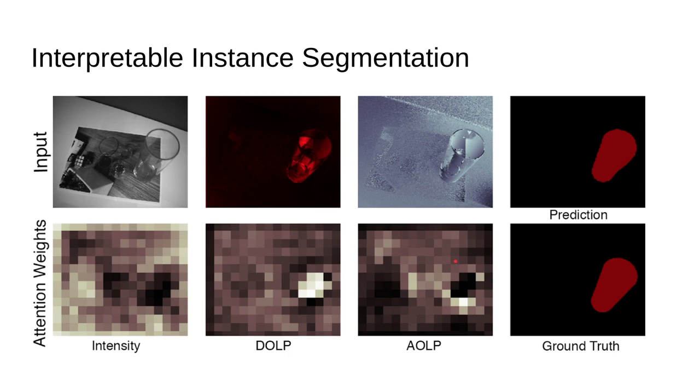Furthermore, we do interpretable instance segmentation. So here we visualize the attention weights on the bottom, and that shows that the DOLP and AOLP are actually the most heavily weighted when it comes to the prediction of the cup, creating robustness to printout spoofs.